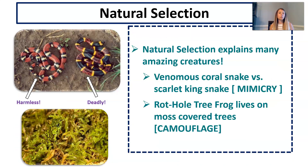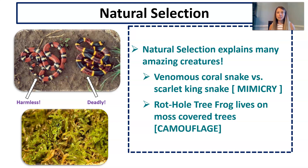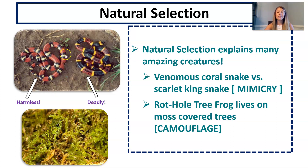Natural selection explains some really amazing creatures we have on Earth. For example, it explains mimicry — when a non-venomous creature mimics or appears like a venomous creature. The coral snake is very deadly and venomous. The scarlet king snake is completely harmless, but if you look at their coloring it's pretty similar: red, black, and yellow. So how did this happen?